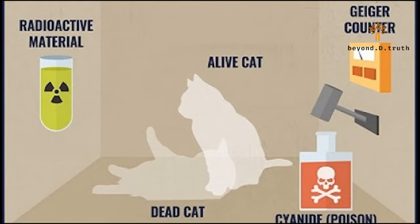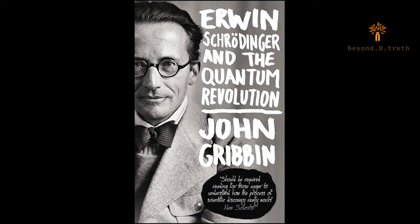Schrodinger's cat is a thought experiment sometimes described as a paradox devised by Austrian physicist Erwin Schrodinger in 1935. He was one of the leading scientists of his time. He came up with this experiment to try to explain quantum physics to the masses to make it understandable.